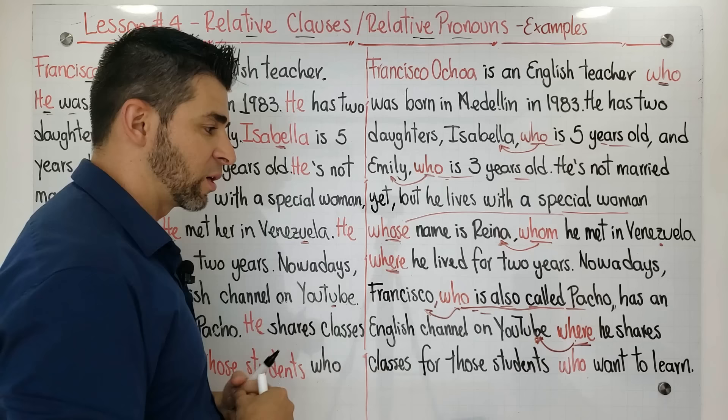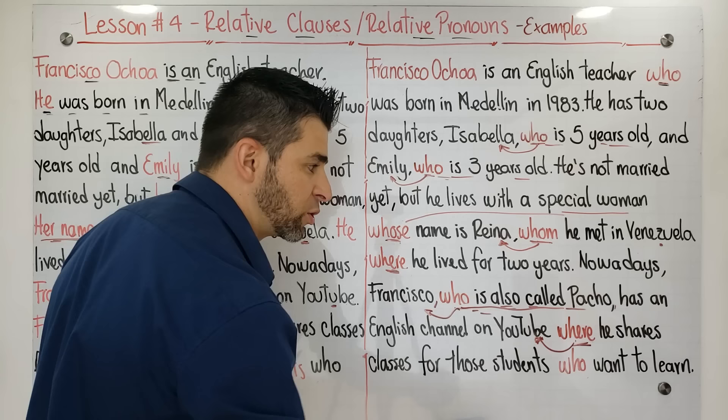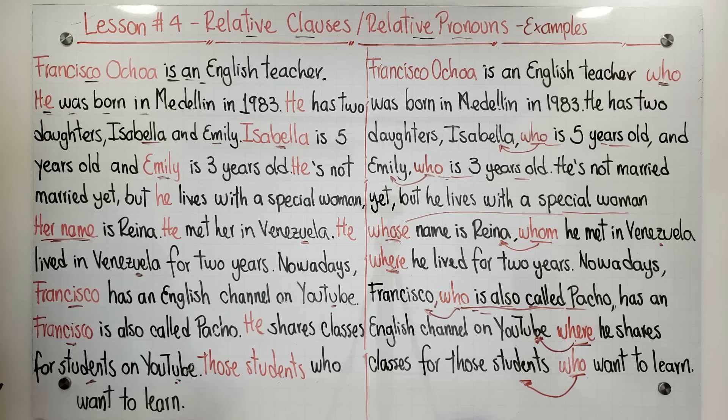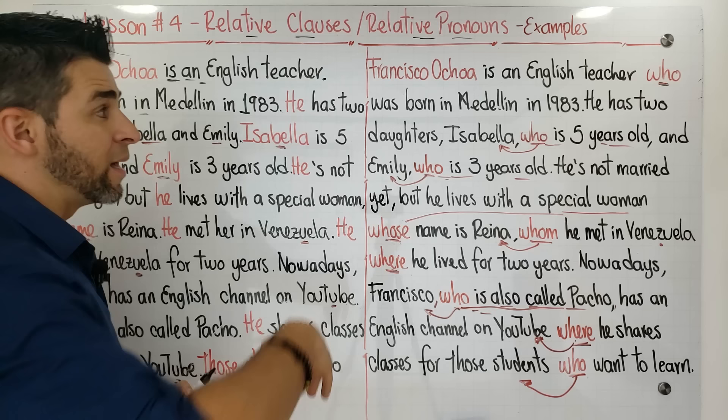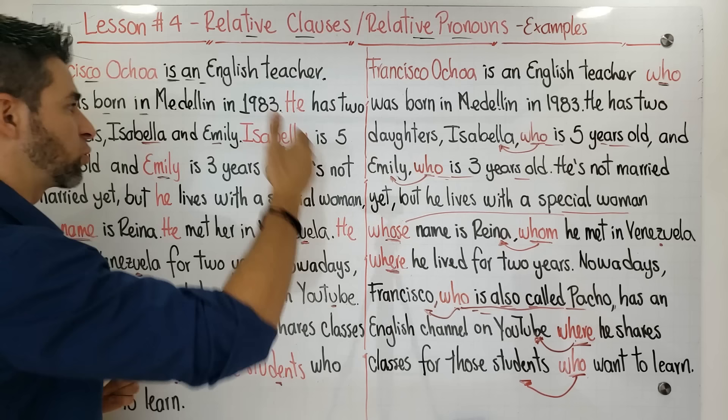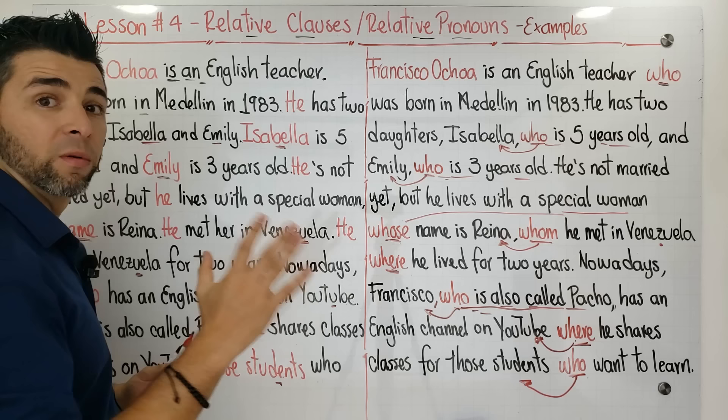'...where he shares classes for those students who want to learn.' This 'who' is talking about those students. In the first version we were repeating 'students' twice. Now if we read the story again you're going to understand it much better, and it will be much more fluent because we don't have so many pauses and repetitions as we had in the first version.